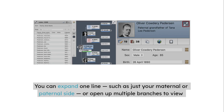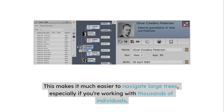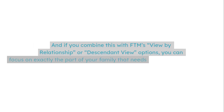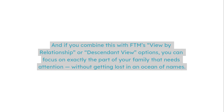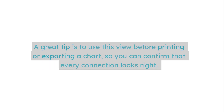Click the arrow to expand or collapse a family branch. You can expand one line, such as just your maternal or paternal side, or open up multiple branches to view extended families at once. This makes it much easier to navigate large trees, especially if you're working with thousands of individuals. And if you combine this with FTM's view-by-relationship or descendant view options, you can focus on exactly the part of your family that needs attention without getting lost in an ocean of names. A great tip is to use this view before printing or exporting a chart, so you can confirm that every connection looks right.